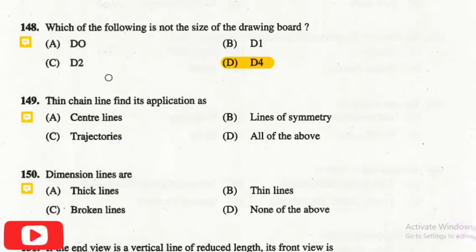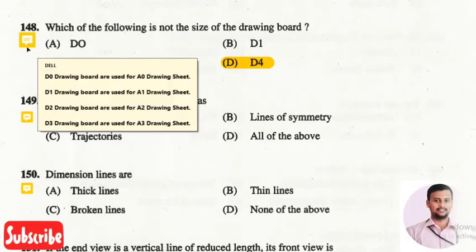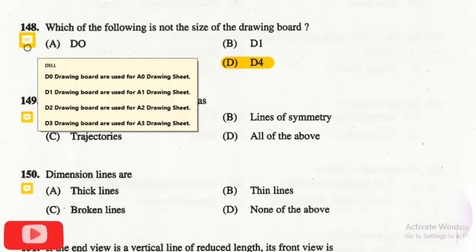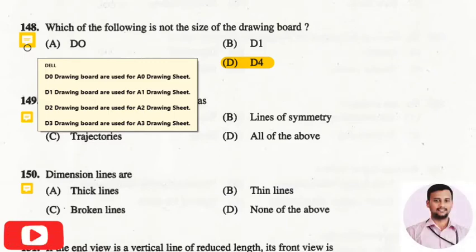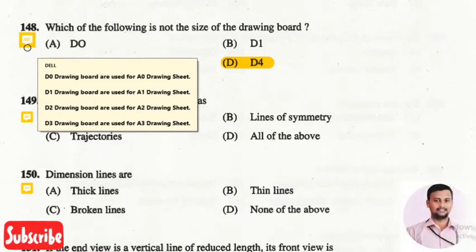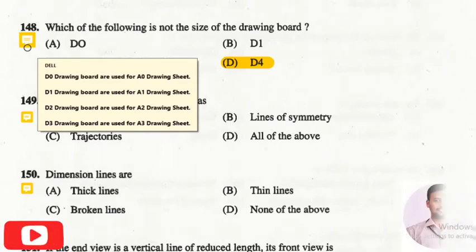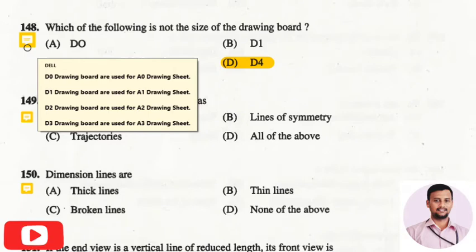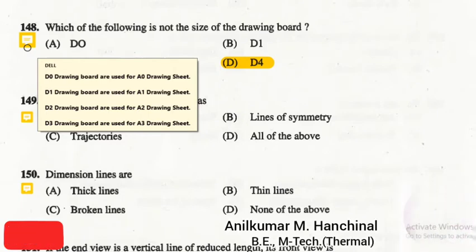There are four types of drawing boards used in normal industrial or engineering drawing. The D0 drawing board is used for the A0 sheet, D1 drawing board is used for the A1 drawing sheet, D2 drawing board is used for the A2 drawing sheet, and D3 drawing board is used for the A3 drawing sheet.